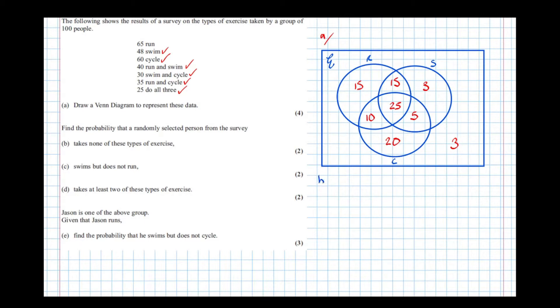Part B: find the probability that a randomly selected person from the survey takes none of these types of exercise. Well, we've already done it — there are 7 people on the outside. That's 7 out of 100.